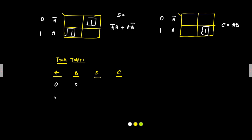The truth table for the half adder shows inputs A and B. The sum is essentially the XOR operation. When both inputs are the same type — 0,0 or 1,1 — the sum output is 0. When they are opposite — 0,1 or 1,0 — the sum output is 1. This confirms that sum = Ā·B + A·B̄ is the XOR function.